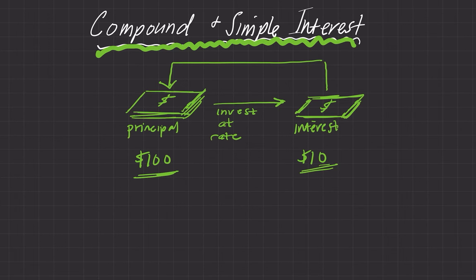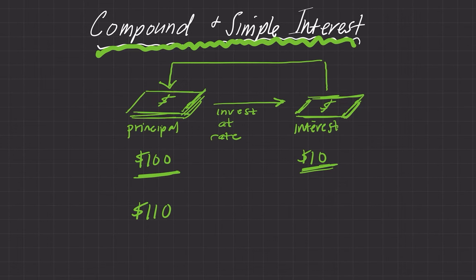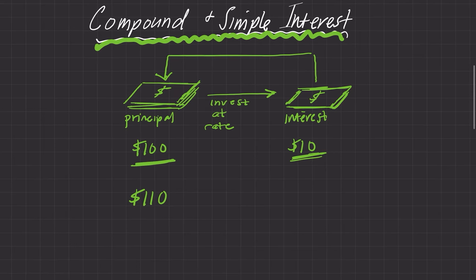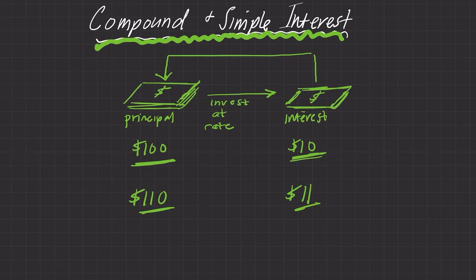Compound interest would be different. Within two years: the first year you start off with $100, you add $10, so you get $110. But the second time through, you're starting at $110. Now you add 10% on that, which is not $10 anymore but $11. Put $110 and $11 together and you don't have $120 but $121. And that's more.